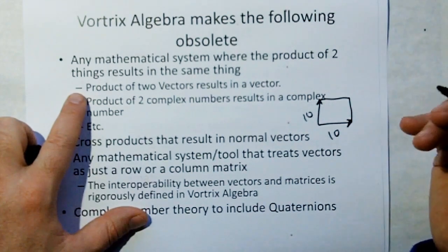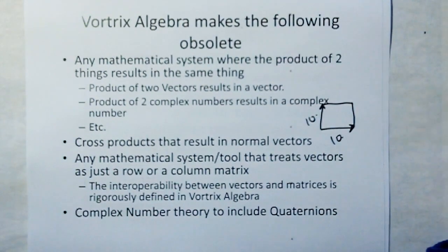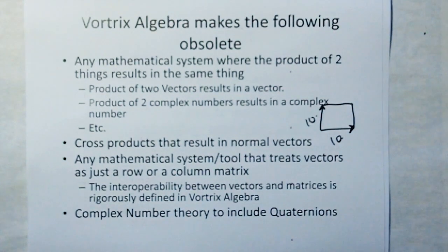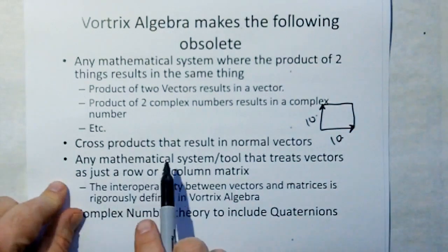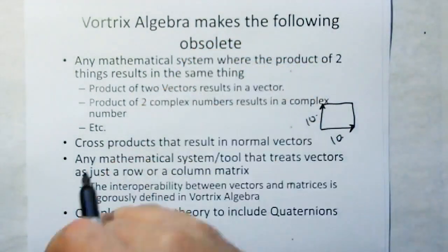The multiplication of two things cannot - if I multiply a line by a line, I can't get a line. It's got to be something different. Any system where the product of two things results in the same form and same units is ridiculous. It is both dimensionally and in terms of form invalid. An example of that is a cross-product that results in a normal vector. That's a transgression.